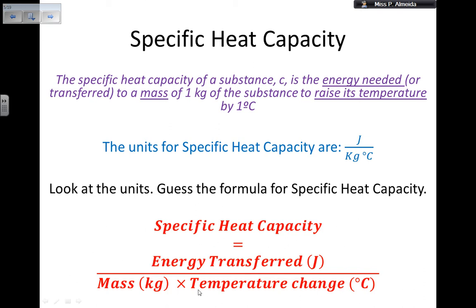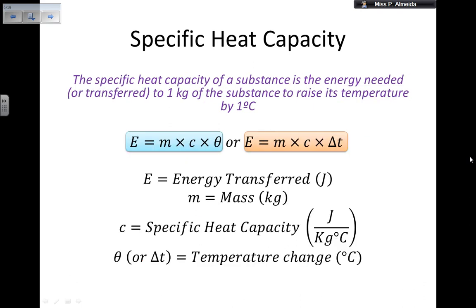Another common exam mistake: students forget to put brackets around (m × ΔT) in the denominator. Instead of dividing energy by the product of mass and temperature change, they divide only by mass and then multiply by temperature change, giving the wrong result. In a calculator, make sure you use brackets so both mass and temperature change are multiplied together before dividing the energy.